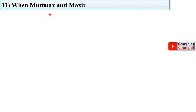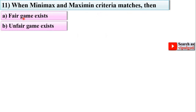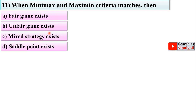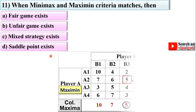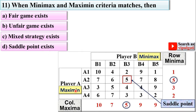Next question: when minimax and maximin criteria match, options are: fair game exists, unfair game exists, mixed strategy exists, or saddle point exists. Looking at this image, the maximin value is 5 and the minimax value is 5. When minimax and maximin values match, there is a saddle point. So D is the right answer.